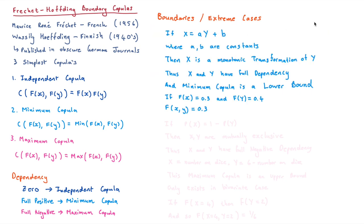Looking at the minimum copula in more detail: if X is equal to a function of Y — say A times Y plus B, where A and B are constants — then X is a monotonic transformation of Y. Thus X and Y have full dependency, and the minimum copula forms a lower bound. So if F of X equals 0.3 and F of Y equals 0.4, the joint distribution is 0.3. This means no matter what two probabilities we have — say 60% and 70% — there is a lower bound it cannot go below.